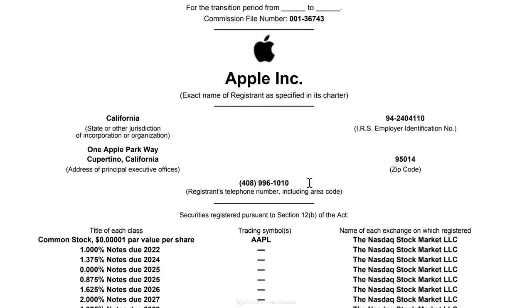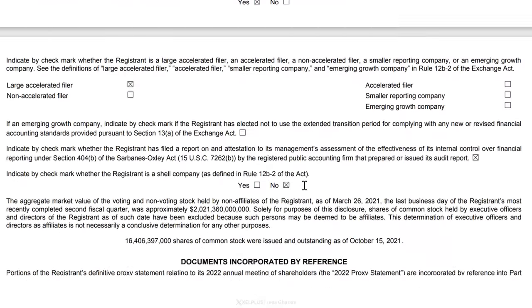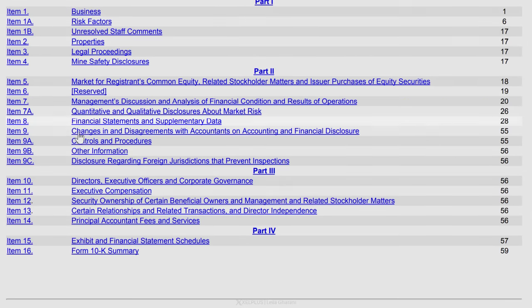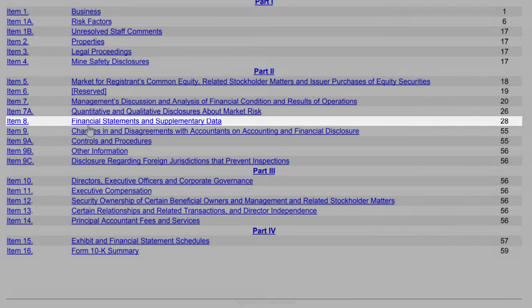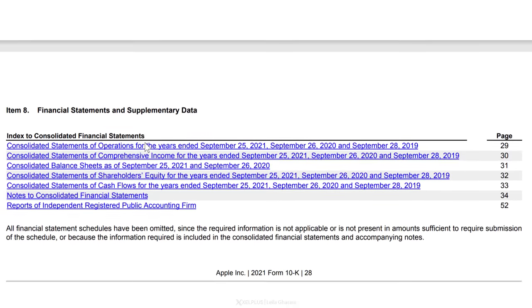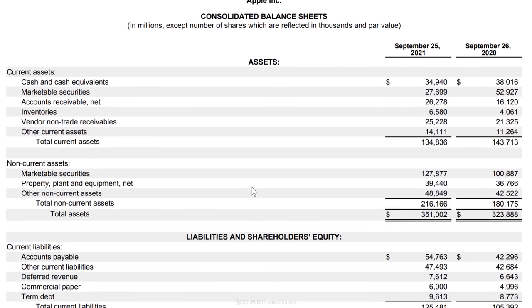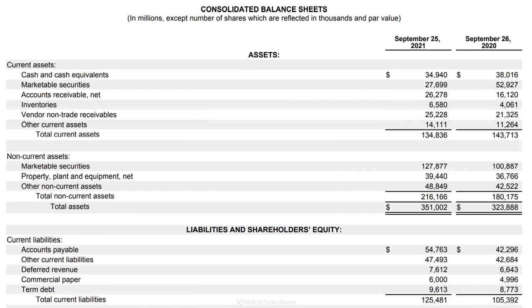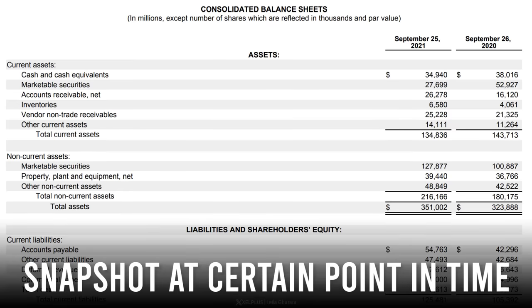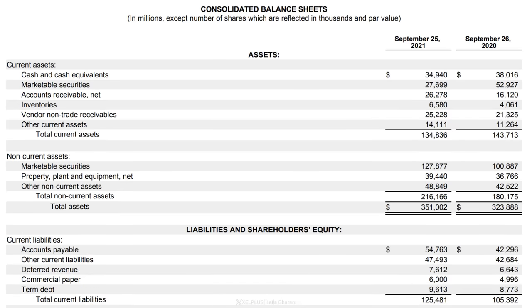When we scroll down, we get to the table of contents, and item eight right here is what we need — that's where we can find the financial statements. So let's jump to the balance sheet. Something important to point out right away is that a balance sheet gives a snapshot of the financial situation for the business at a certain point in time. In this case, it's September 25th, 2021.